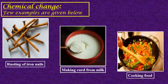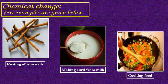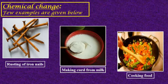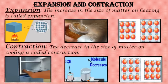The next topic is chemical changes. What are chemical changes? A chemical change is one in which the chemical composition of the substance changes and a new substance is formed. It is also called an irreversible change, as we cannot get the original state of matter again. Examples include rusting of iron nails, making of curds from milk, and cooking of food.